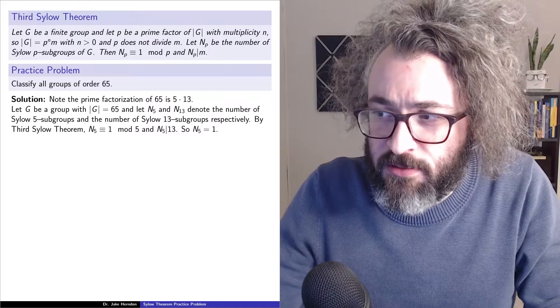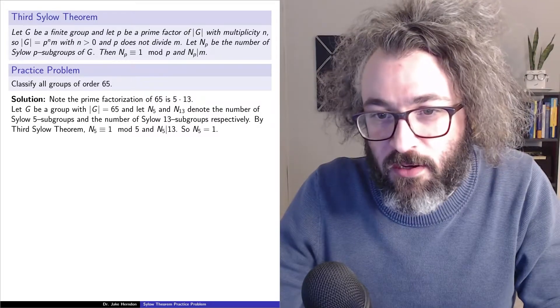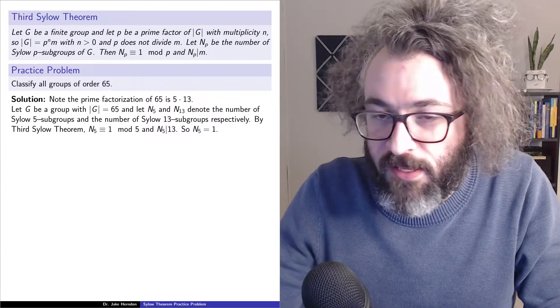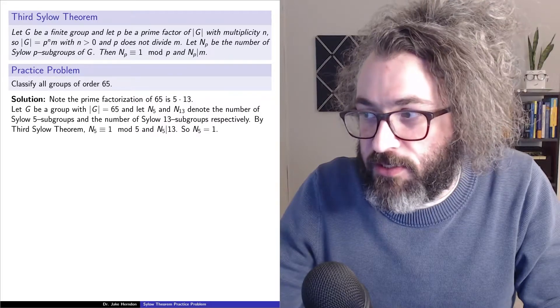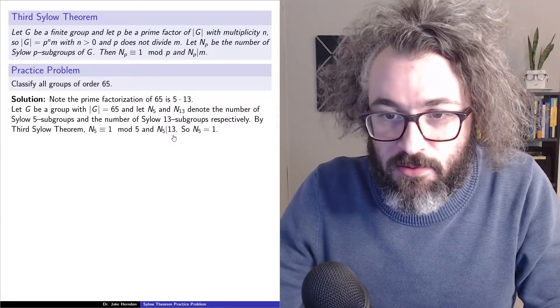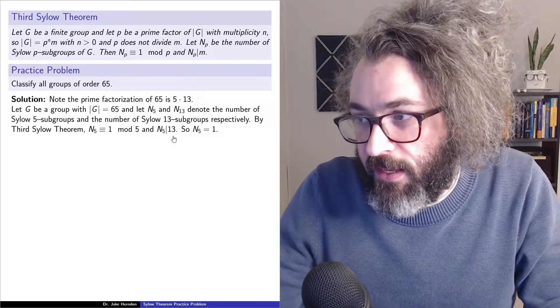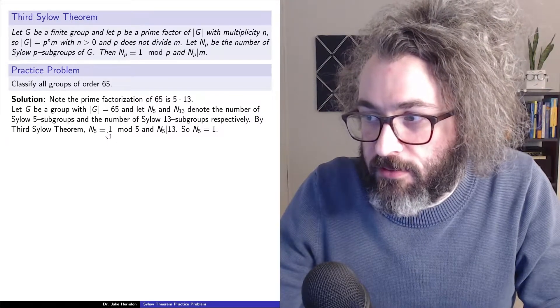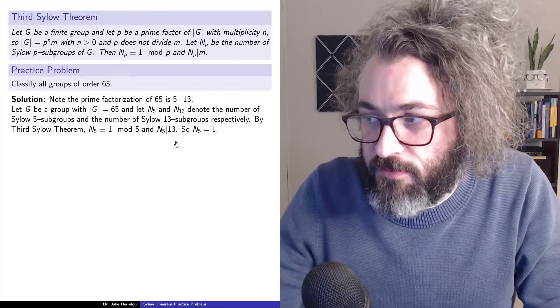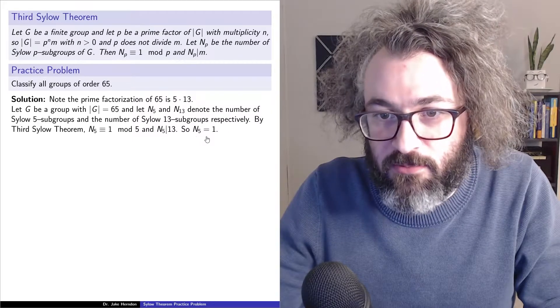By the third Sylow theorem, n_5 is congruent to 1 mod 5, and n_5 divides 13. So there's only two divisors of 13, 1 and 13, and 13 is not congruent to 1 mod 5, so n_5 has to be equal to 1.